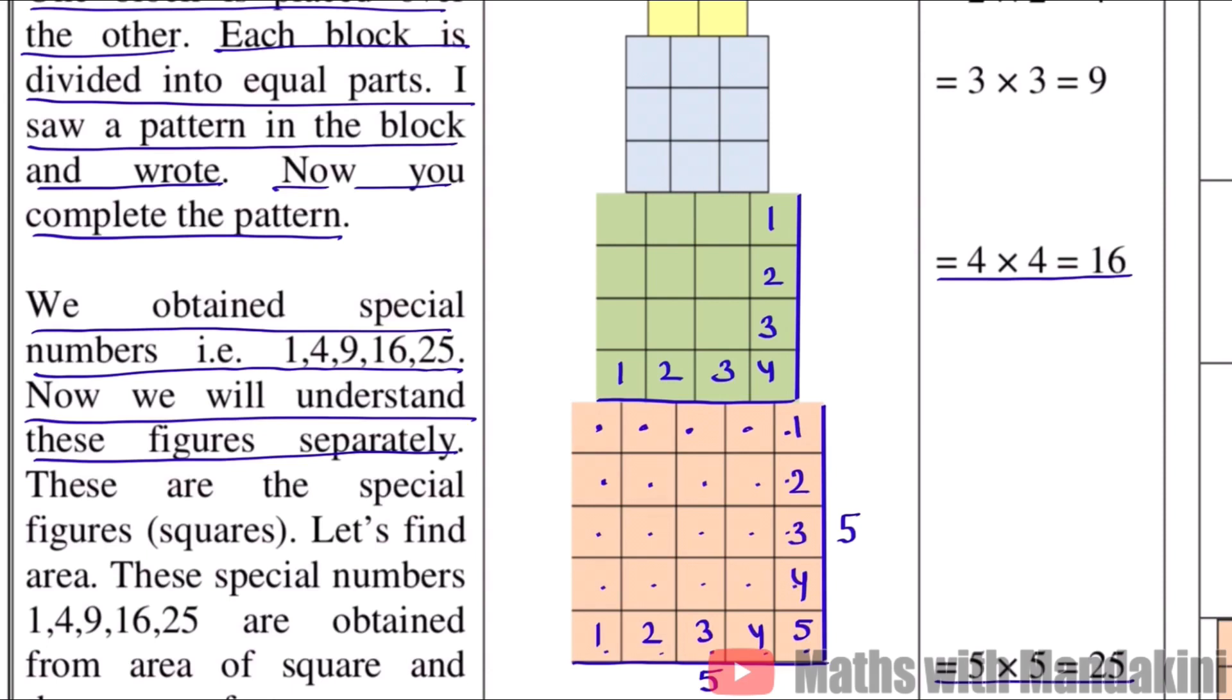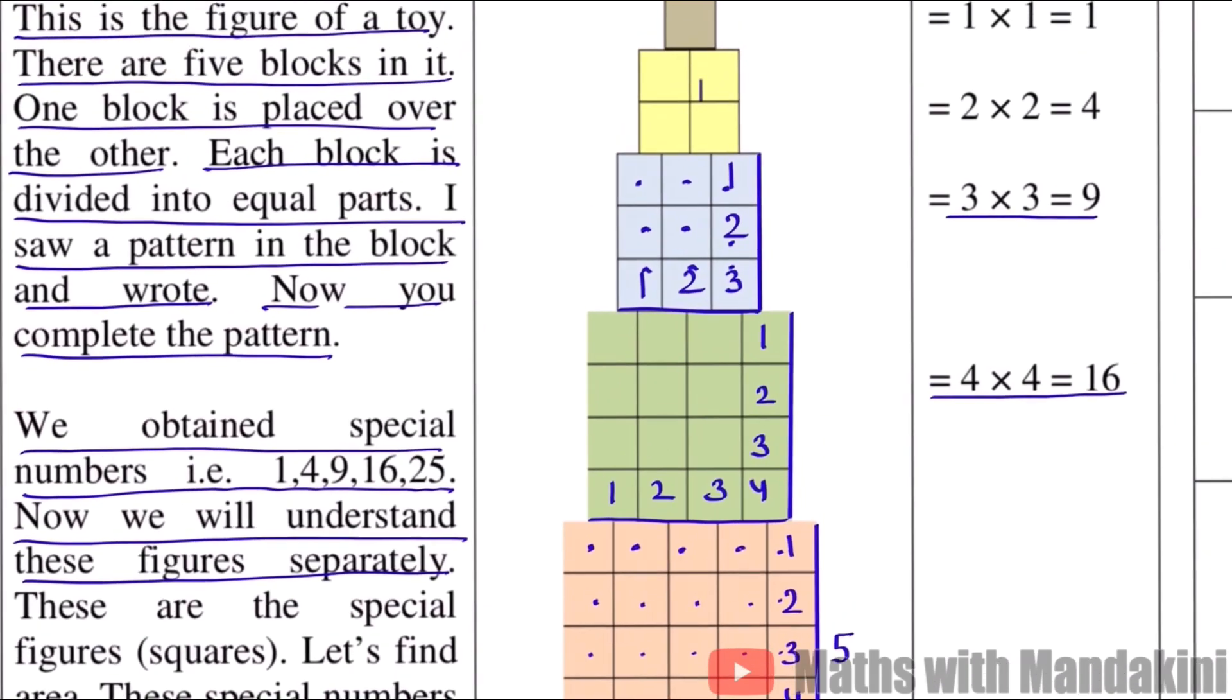Now let's see the green block. One, two, three horizontally and one, two, three vertically. So how many parts are there? 3 into 3, 9. This whole figure is 9 equal parts: one, two, three, four, five, six, seven, eight, nine. Now let's go back to our yellow block.